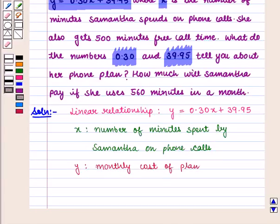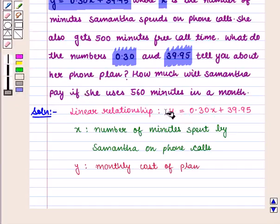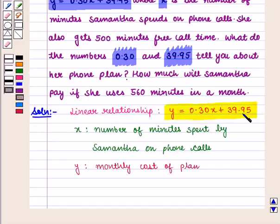Now we see that this equation, y = 0.30x + 39.95, is of the form y = mx + b, which is the slope-intercept form of the equation.